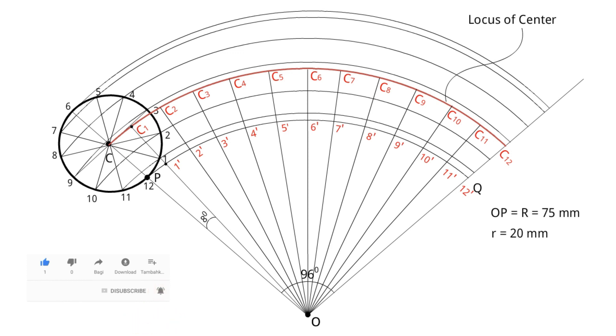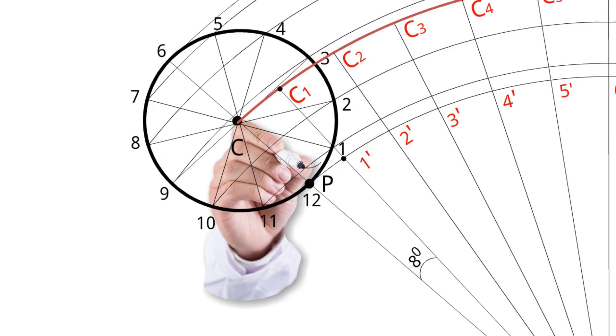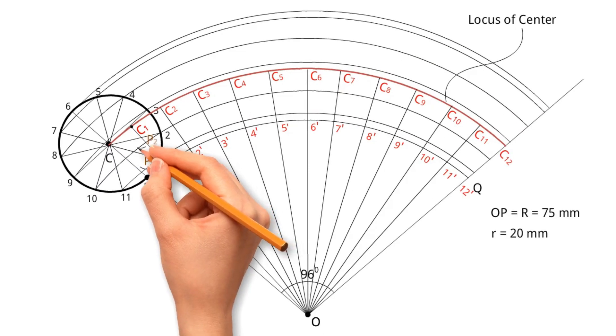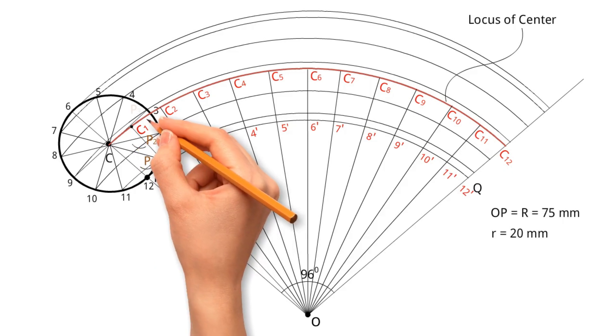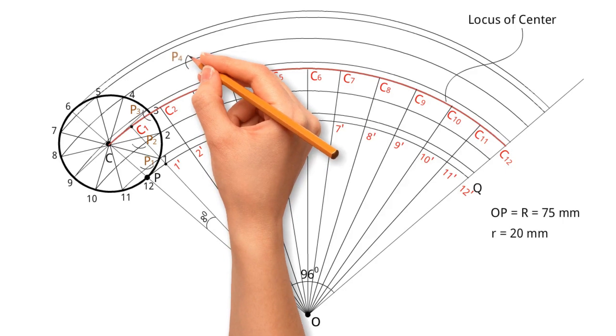Step 9. R equals 20 millimeters. C1 is center. Draw an arc on 11 and 1 line as shown. Locate P1. C2 is center, locate P2. C3 is center, locate P3. Do the same till P12.